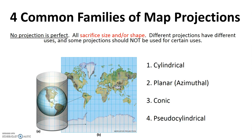Notably, maps that distort size, such as this one, would not be good for uses that require us to compare sizes around the world — for example, if we were trying to map the distribution of a particular type of forest cover or a particular type of land use. Similarly, maps that distort shape would be a poor source for uses that require detailed analysis of shape, like precise country borders.